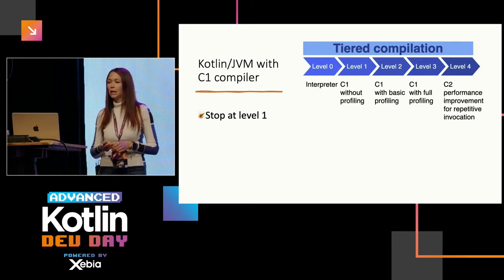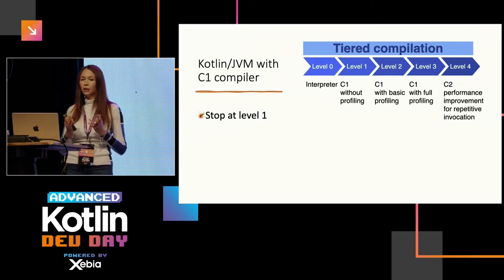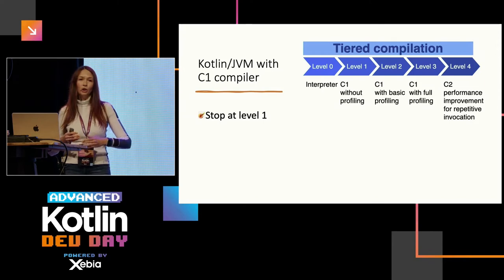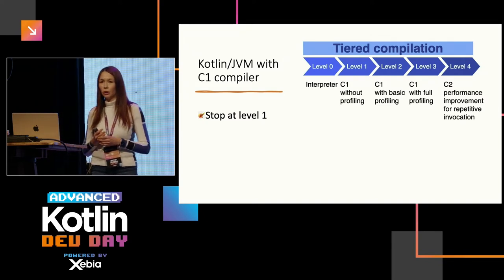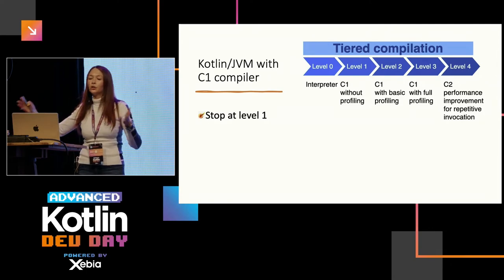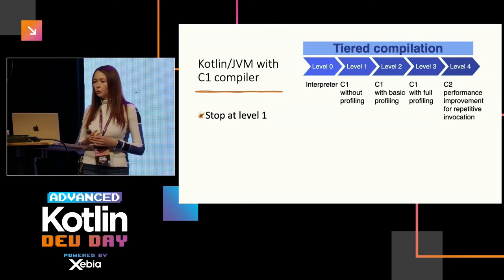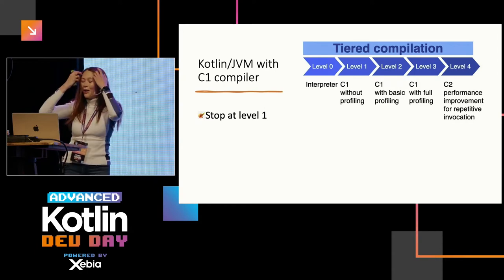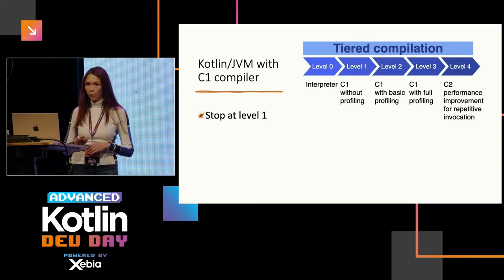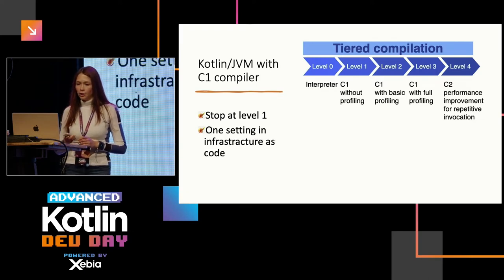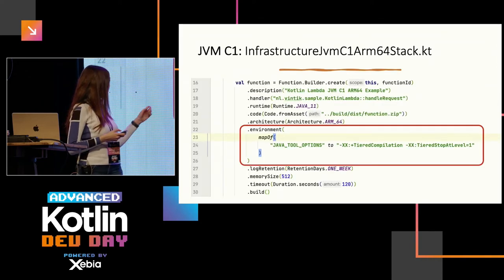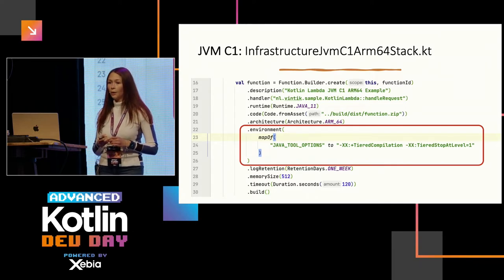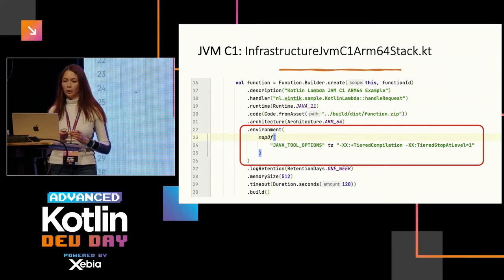Levels two and three add profiling overhead, and level four is the C2 server-side compiler. You only see the benefits of C2 if you run with stable load for a long time — the default threshold is 10,000 calls. For spiky load we don't benefit from that, so we use the C1 compiler. It's just one setting in our infrastructure: on line 24 we set the JVM to stop at tier level one.